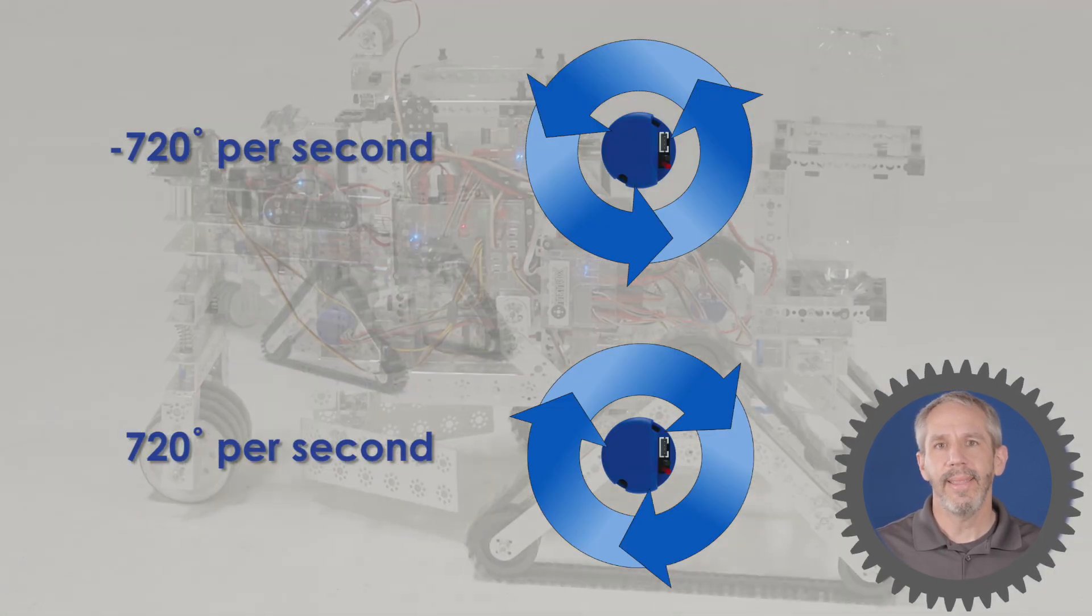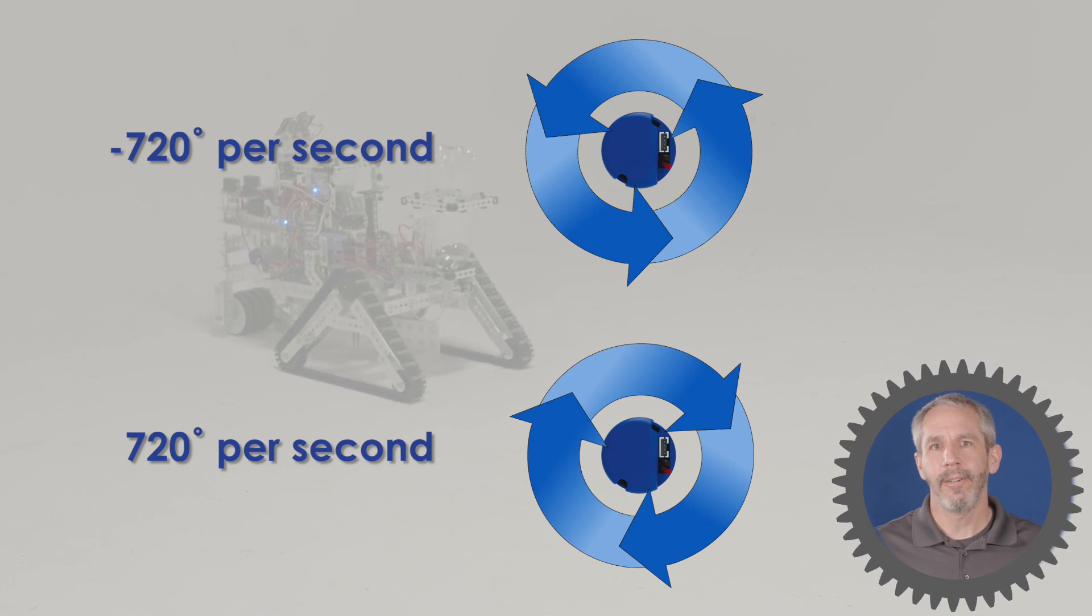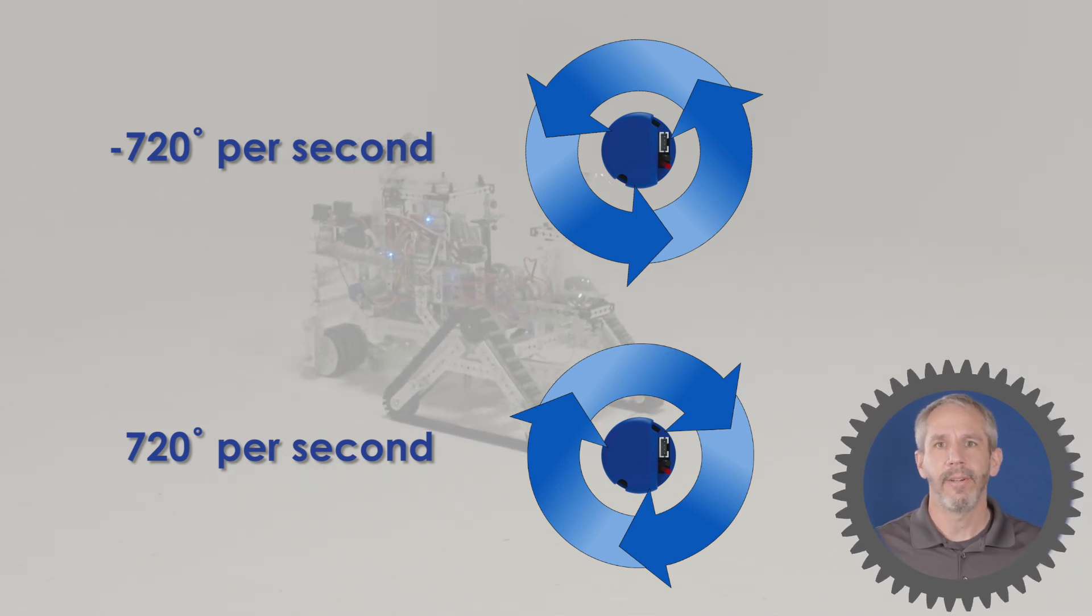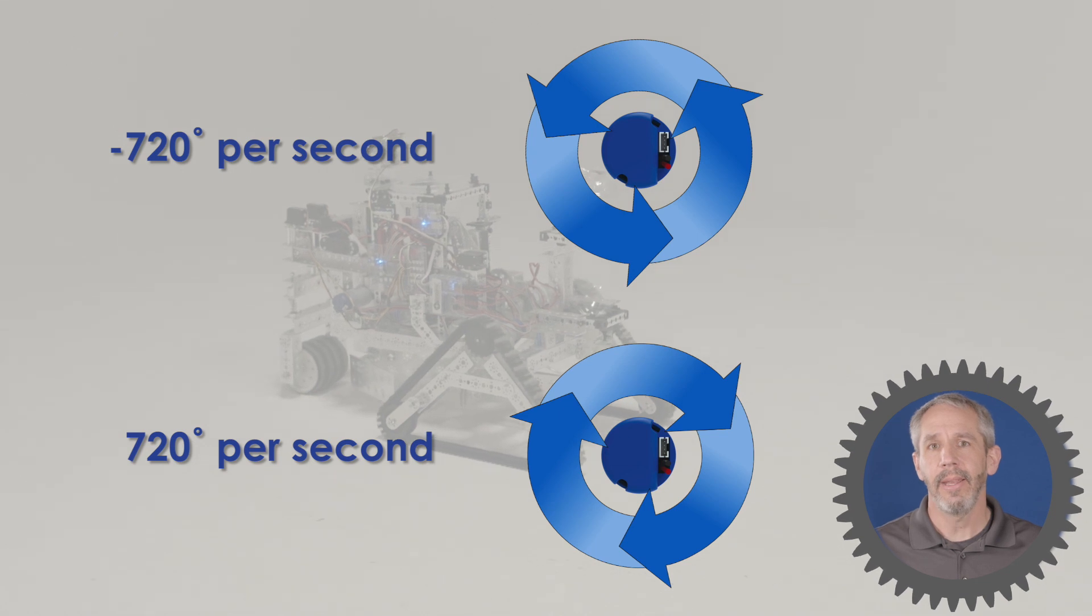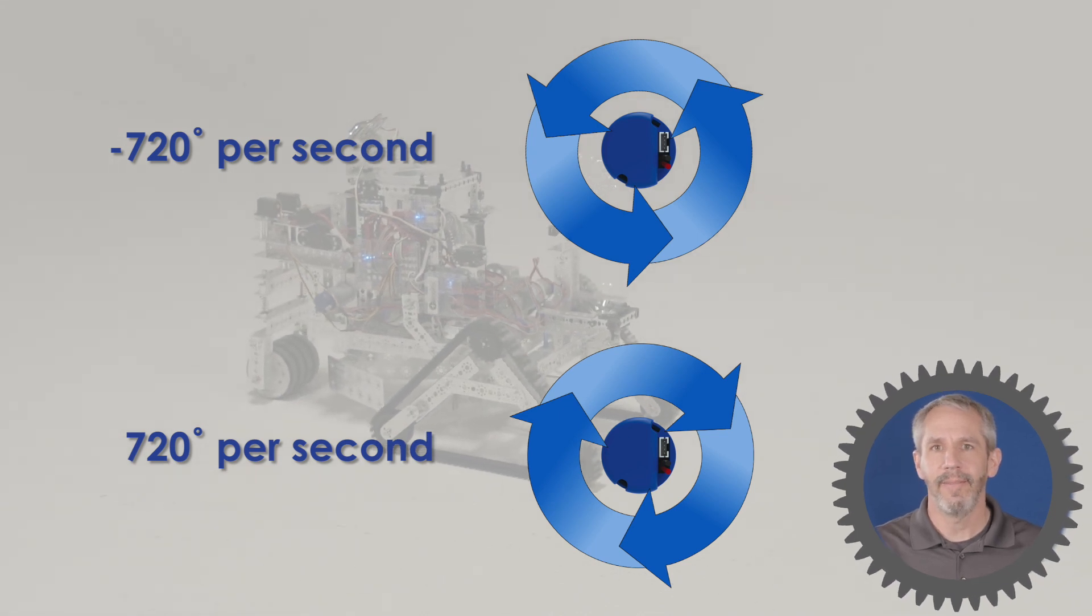Torquenado motors allow you to set that speed between negative 720 degrees per second and positive 720 degrees per second, negative being counterclockwise and positive being clockwise.